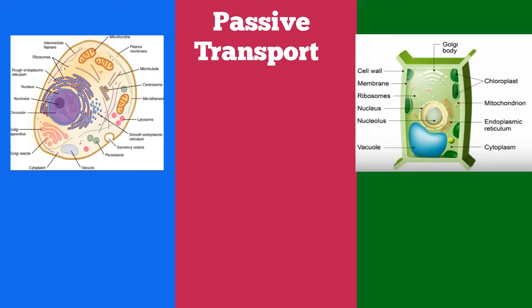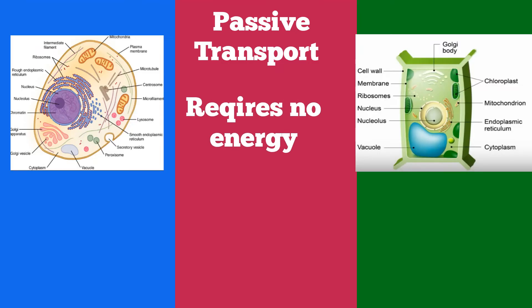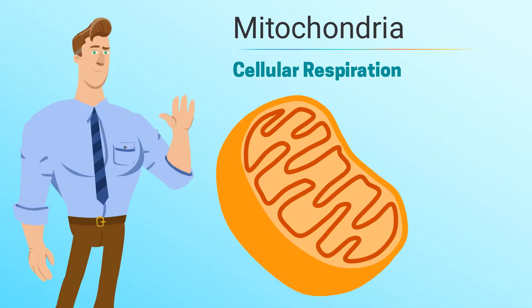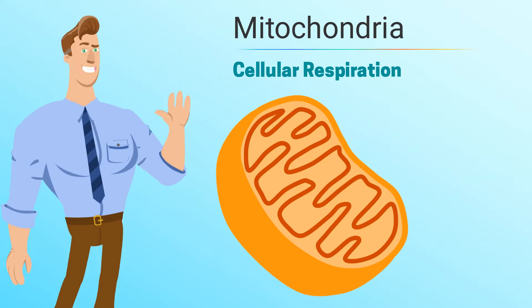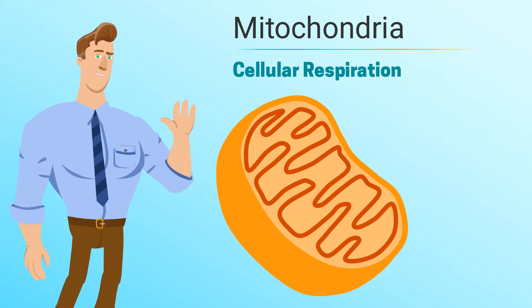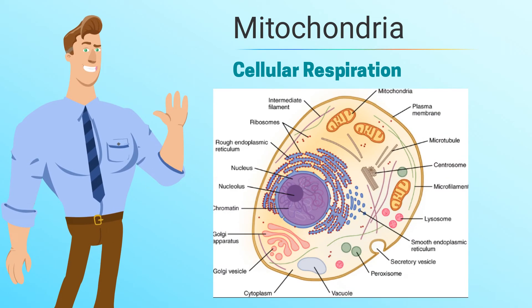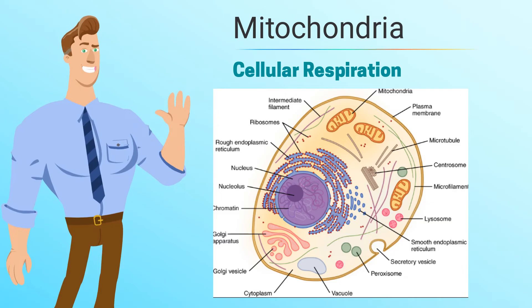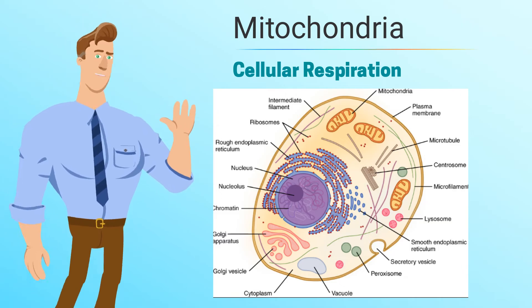Passive transport does not require energy and occurs when objects move from a high concentration to a low concentration. For example, the mitochondria needs oxygen for cellular respiration and produces carbon dioxide, which needs to move out of the cell.